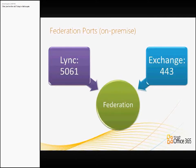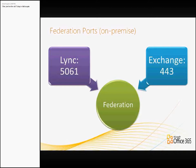If we were running Federation on-premise, there are two ports we would have to allow through our firewalls: for Link, port 5061 TCP, and for Exchange, 443, which is the SSL port or HTTPS. Those are the two ports required to get Federation working. So if you were federating with an organisation using Link Server 2010 or Exchange Server 2010, these are the only ports they would need to open. There are a few steps they would need to go through, but today we're mainly covering federating with other people in Link Online and Exchange Online.